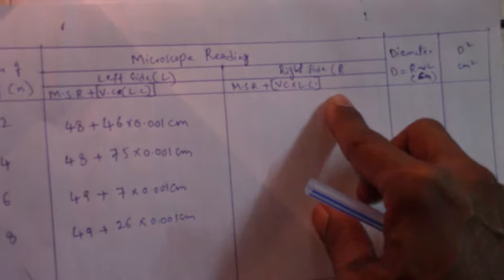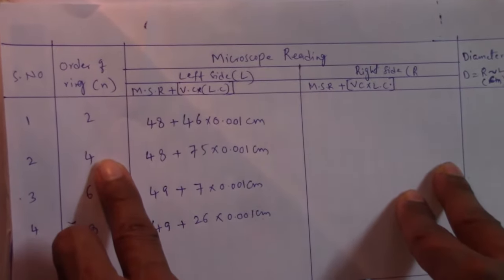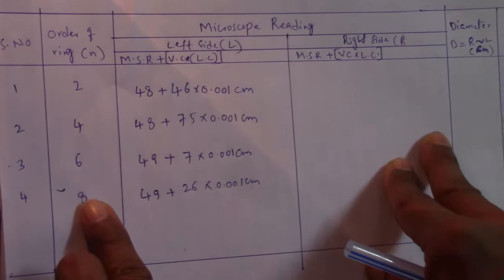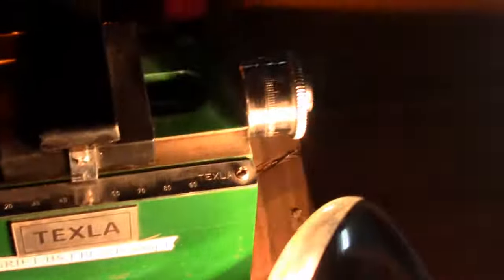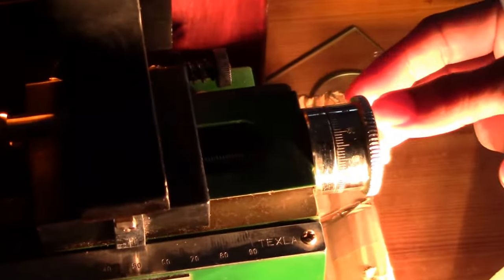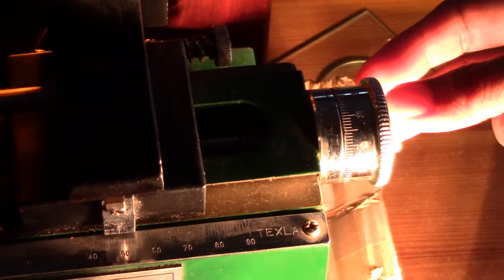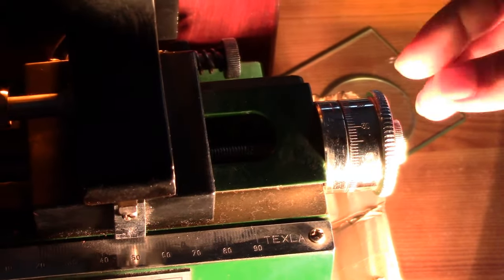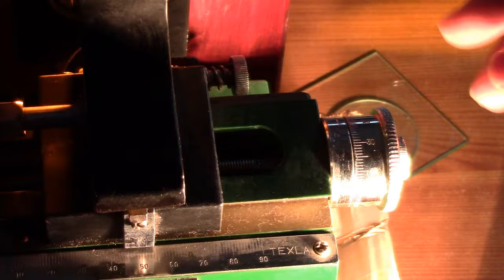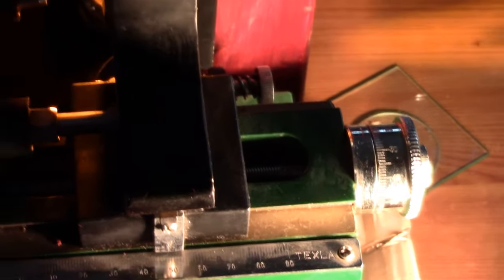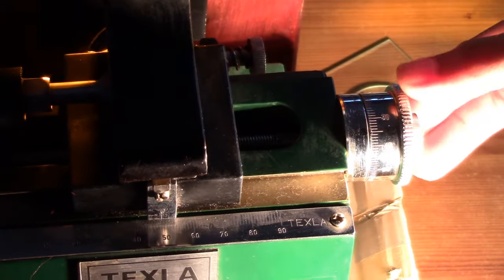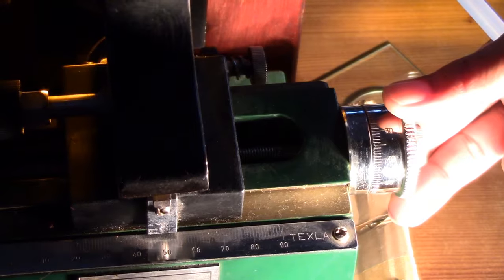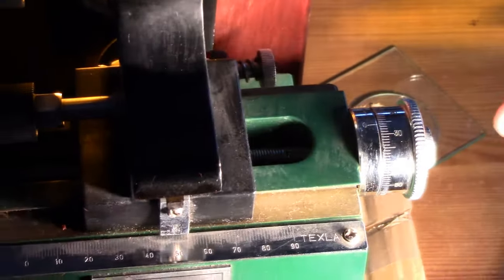The same procedure we have to repeat for the right side direction, considering the 2nd, 4th, 6th, and 8th order dark rings towards the right side direction. One important thing to note: the screw was rotated in the clockwise direction when coinciding the dark rings for the left side. But to coincide the vertical cross wire with the right side dark rings, we have to rotate this screw in the anti-clockwise direction, so that it moves towards the right side direction.